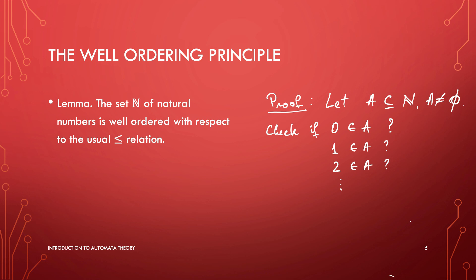We do it one by one starting from zero, and the first number that belongs to A is the least element of set A. This proves with a very easy, almost trivial argument that any non-empty subset of N has a least element.